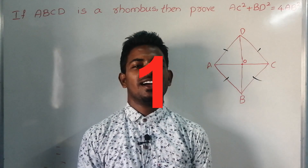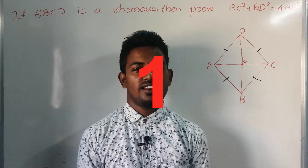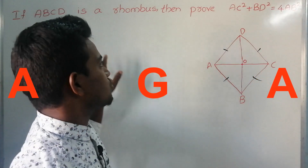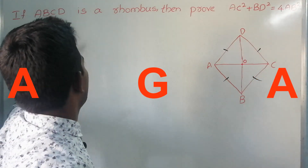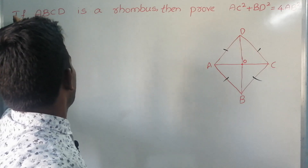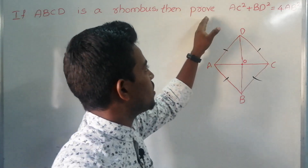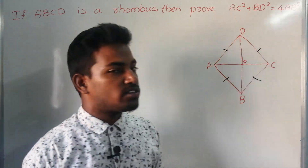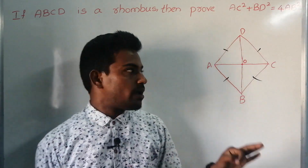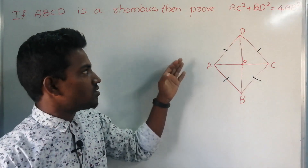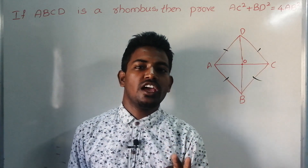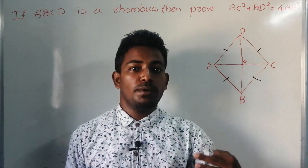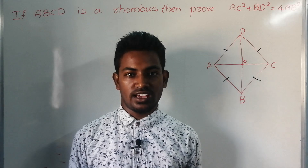Hi friends, welcome to VSN Tutorials. I am your Sagar. In this video I am going to solve this problem: if ABCD is a rhombus, then prove that AC² + BD² = 4AB². This is very helpful for school students as well as people who are preparing for SSC exams.